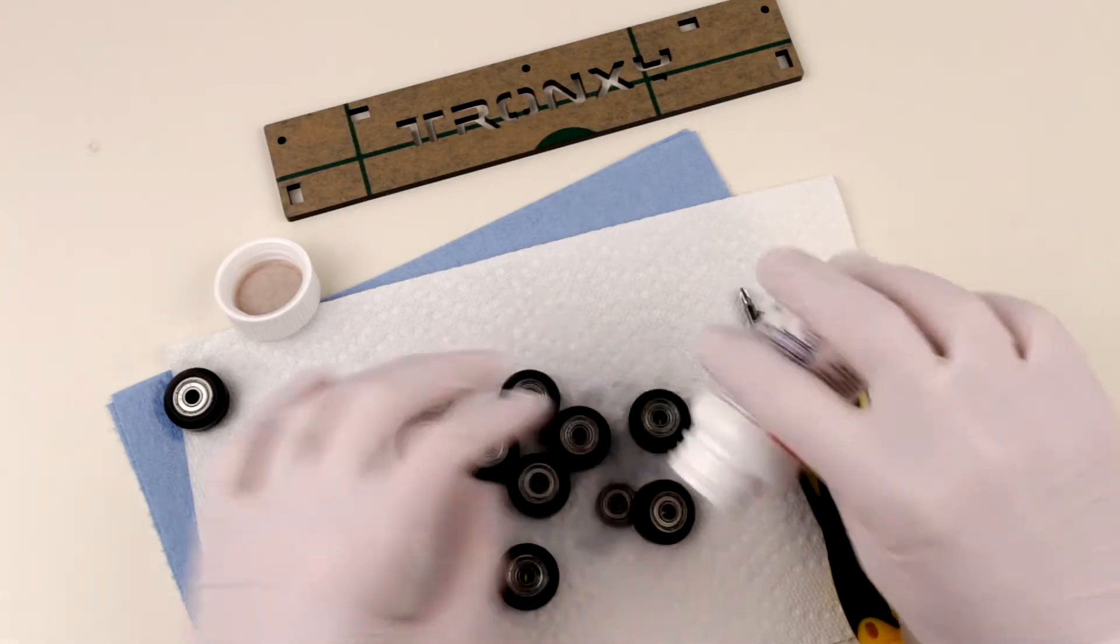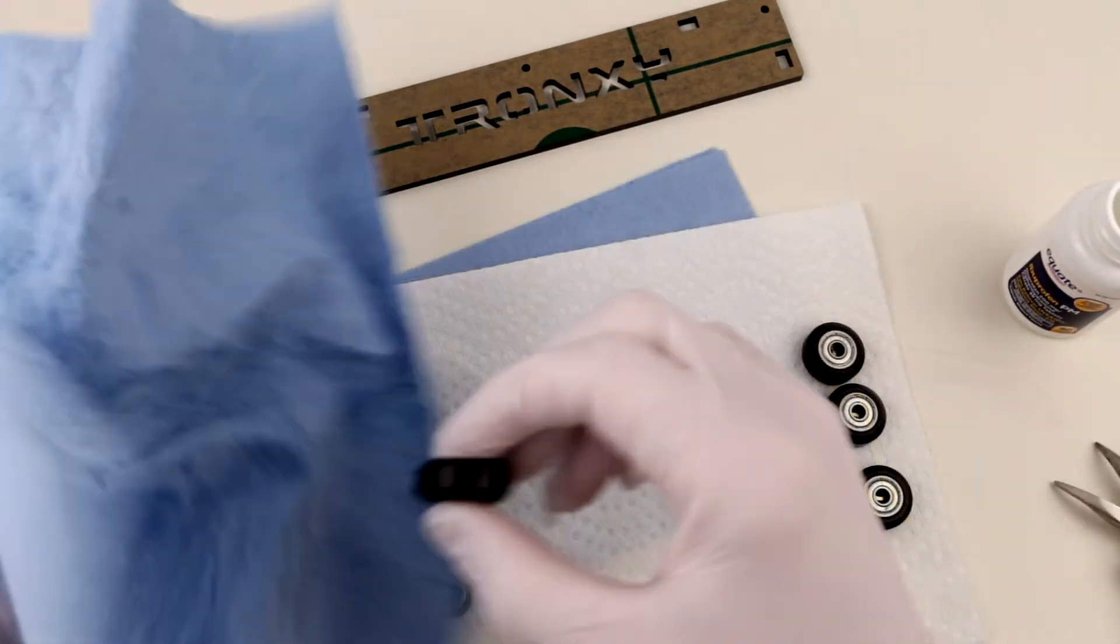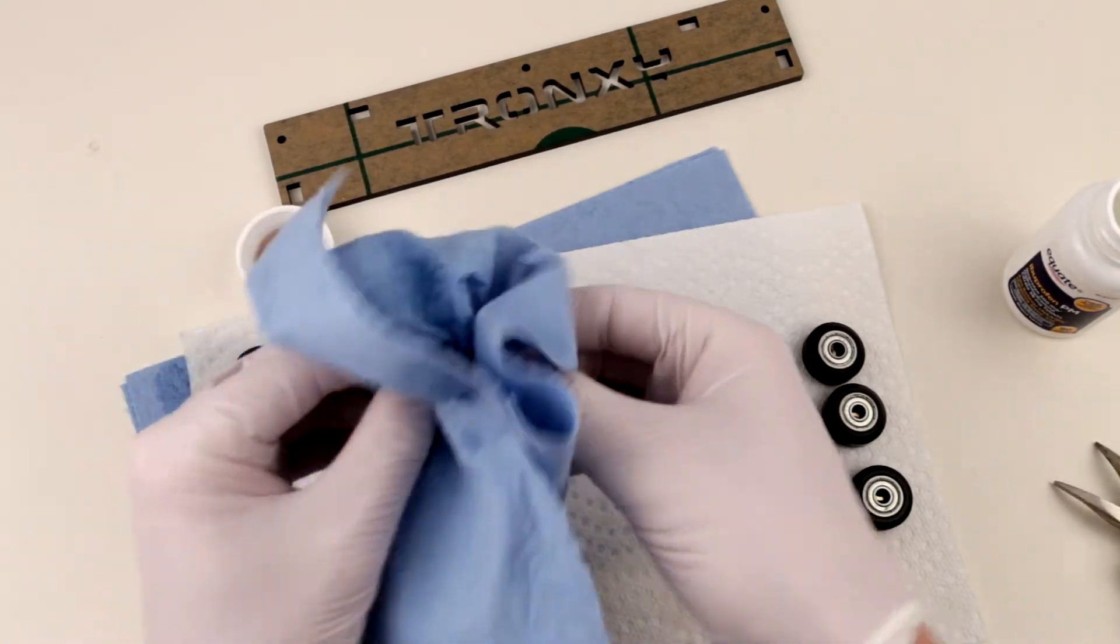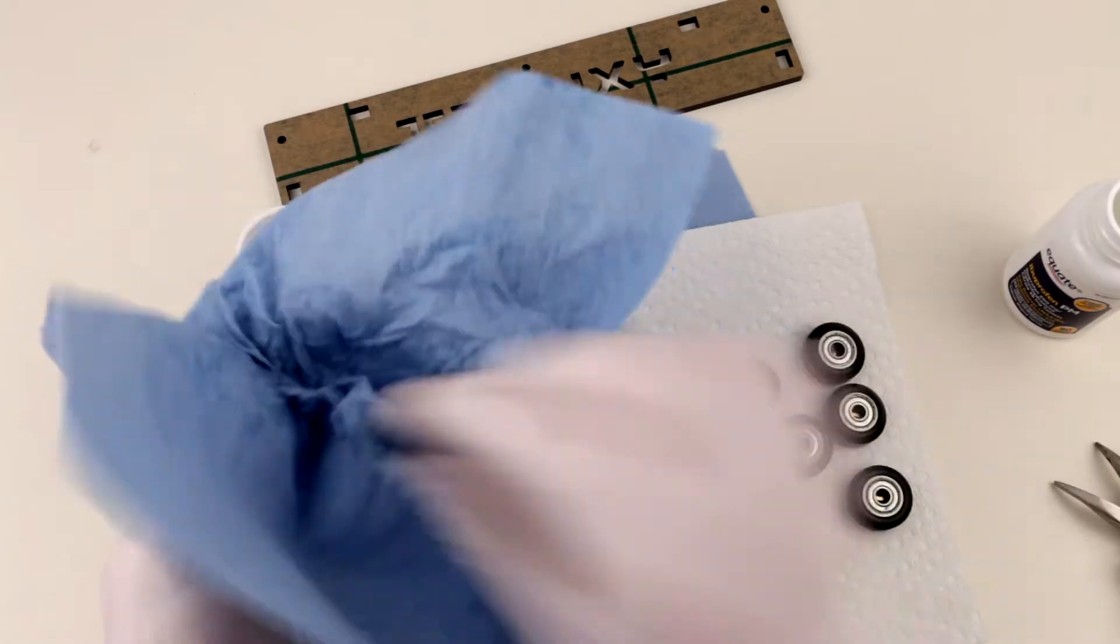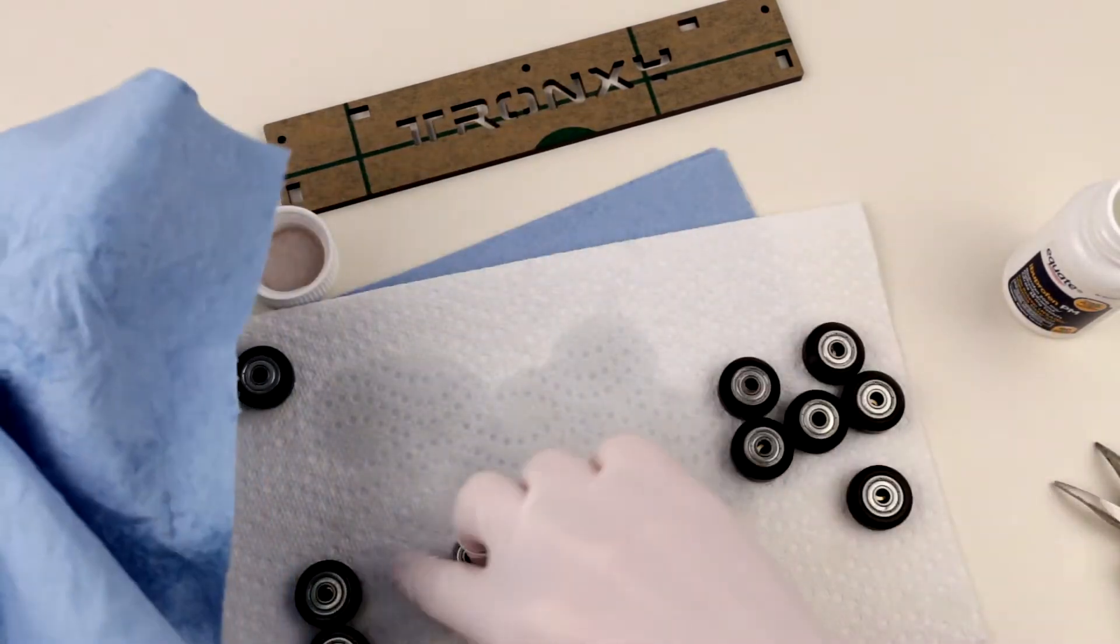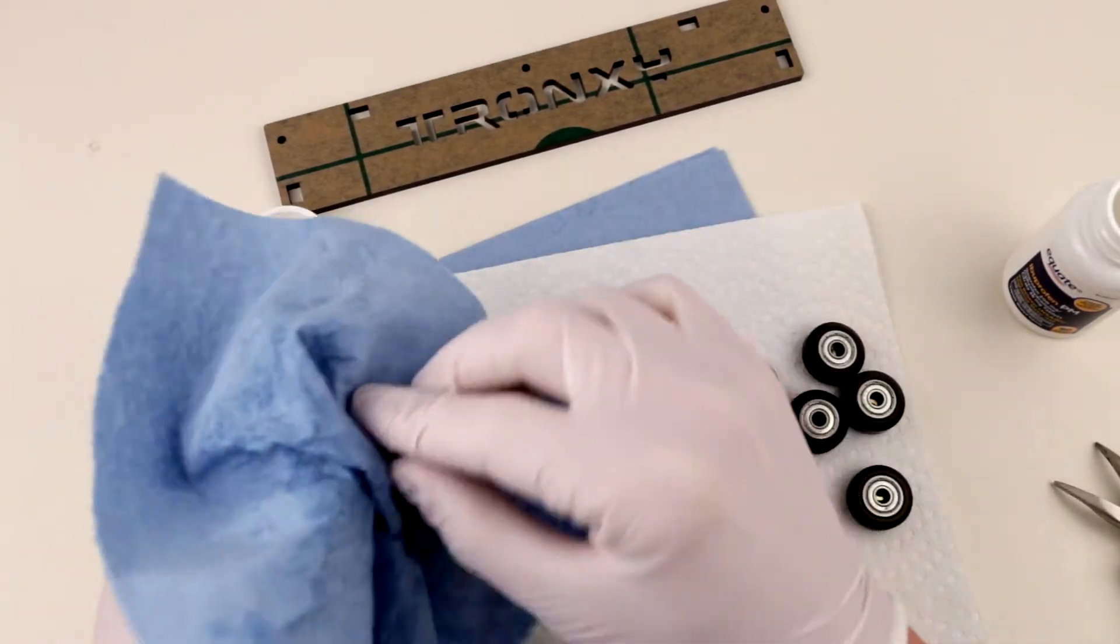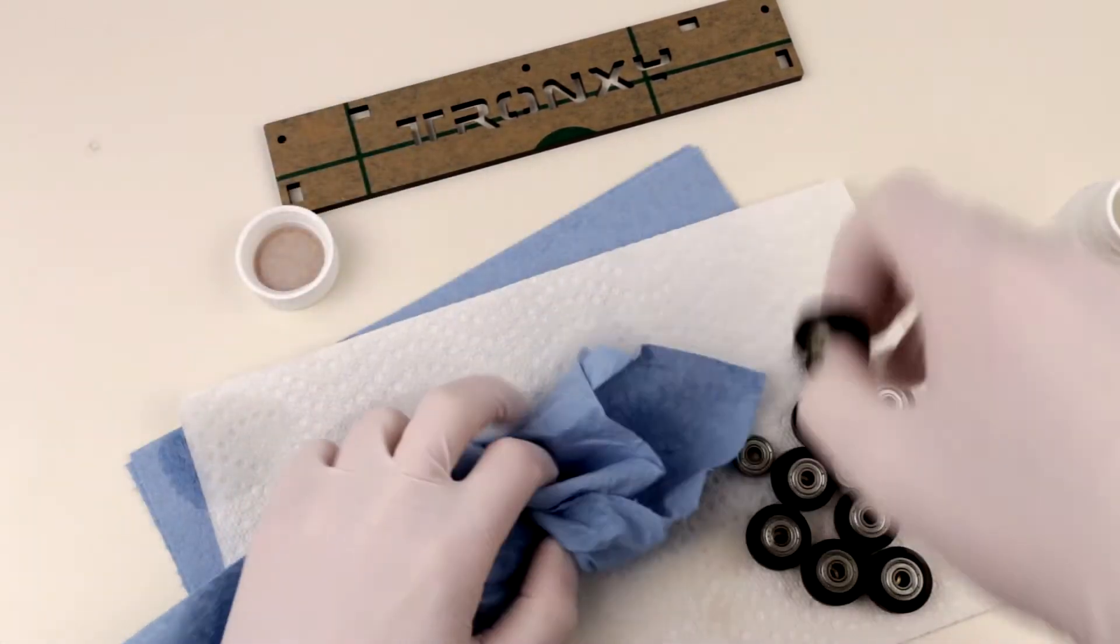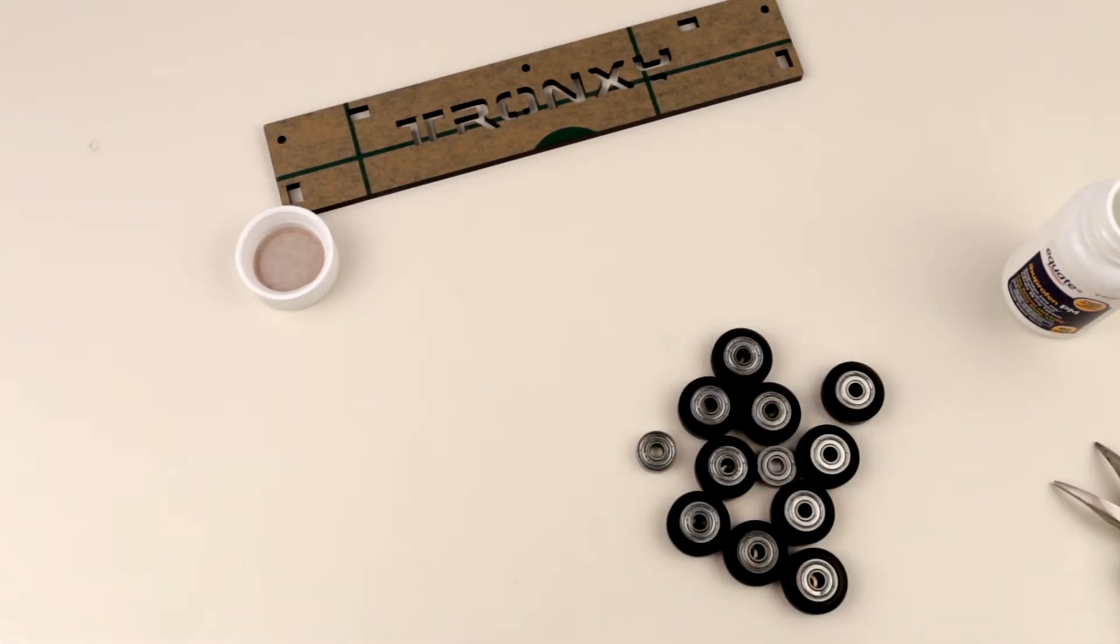Now I'm going to pour as much out as I can, close it up, make sure I label it properly. Now I'm going to spread all this out here and see what bearings actually cleaned up properly, which ones did not. Wipe them very well, clean, nice and clean as much as possible. Obviously you cannot get rid of the WD-40 which is inside, but it's probably okay for the job.